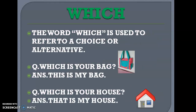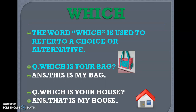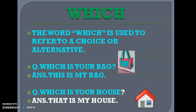The word 'which' is used to refer to a choice or alternative. If the question is 'Which is your bag?' you could answer 'This is my bag.' If the question is 'Which is your house?' you would probably point towards your house and say 'That is my house.'